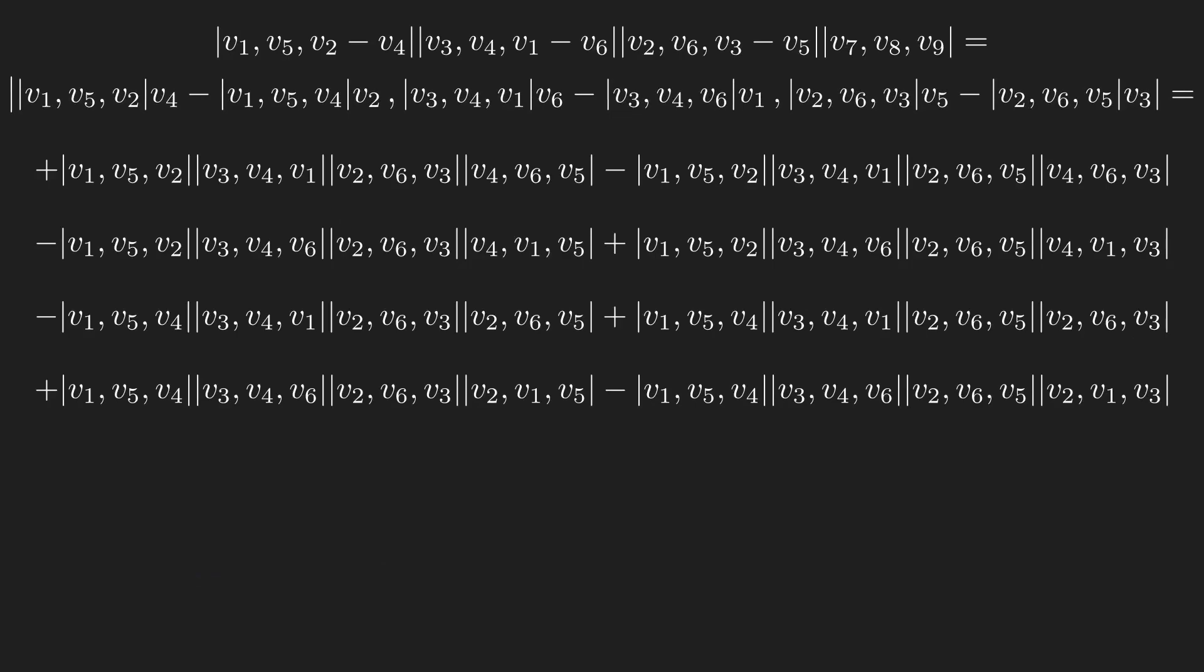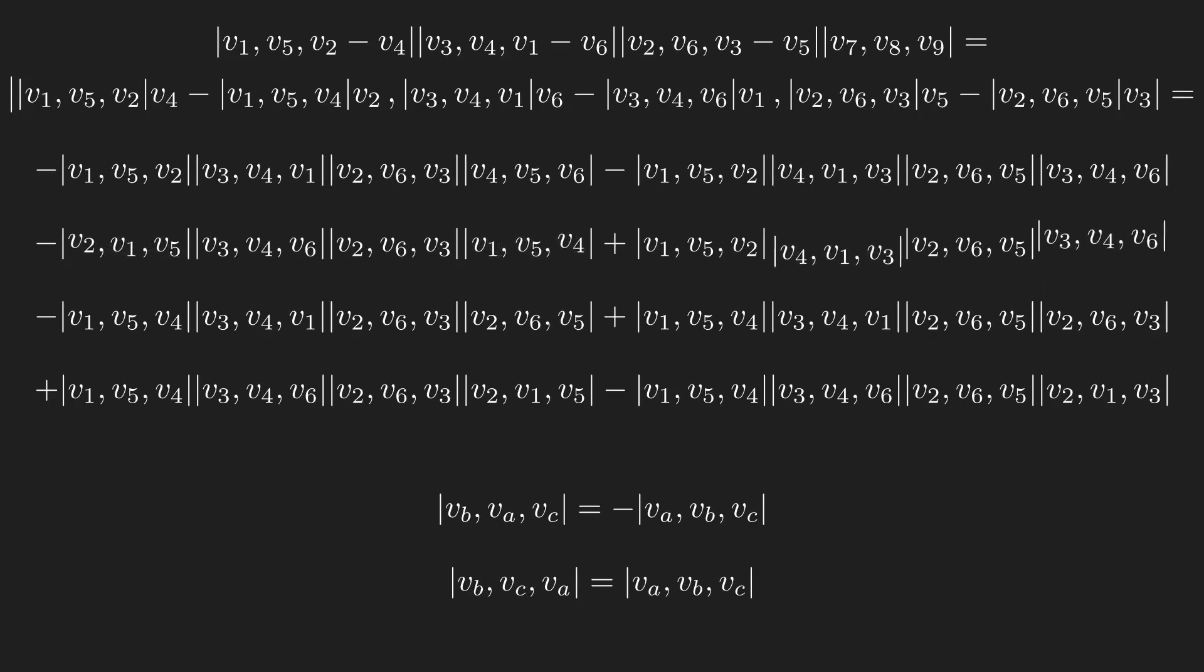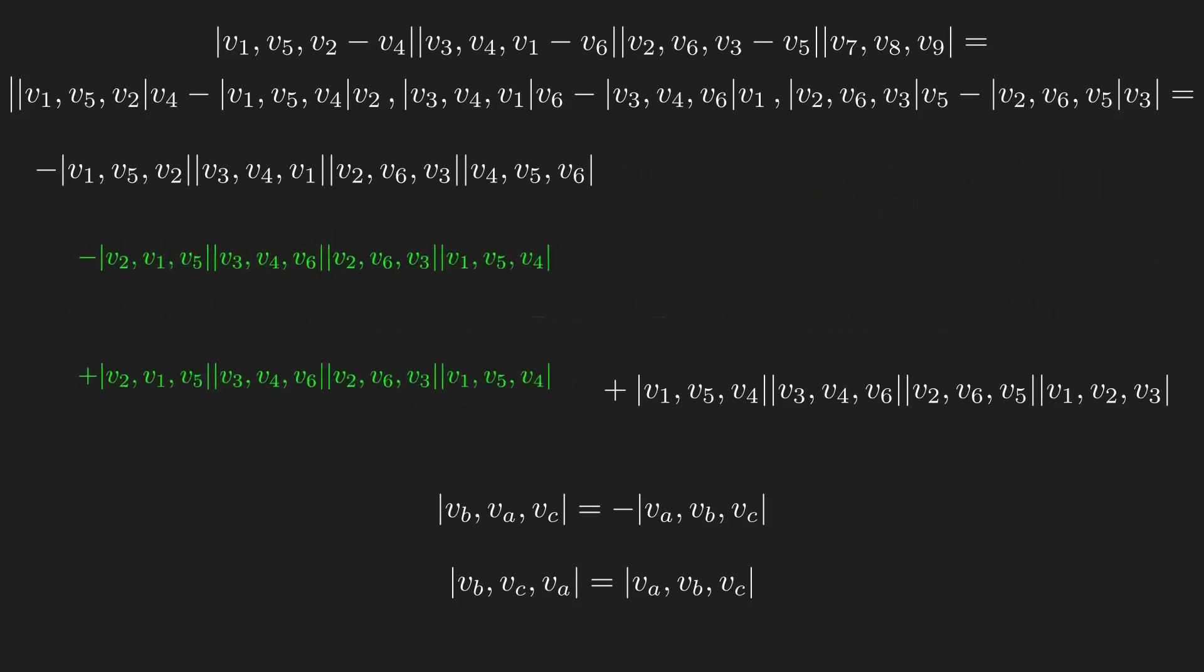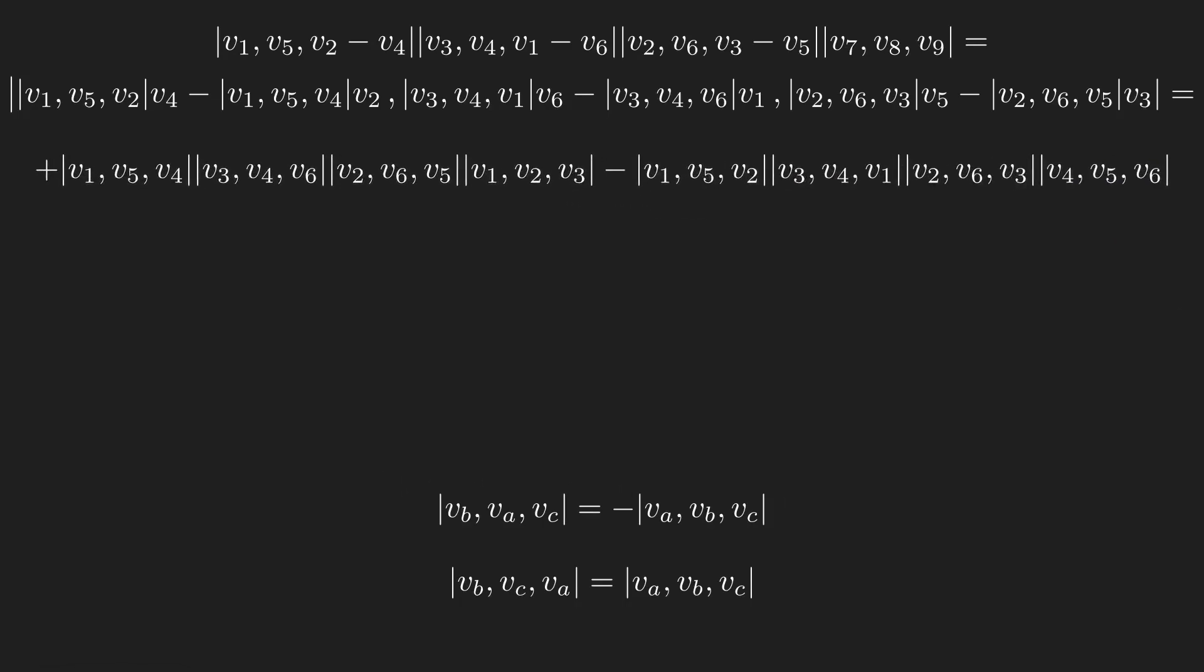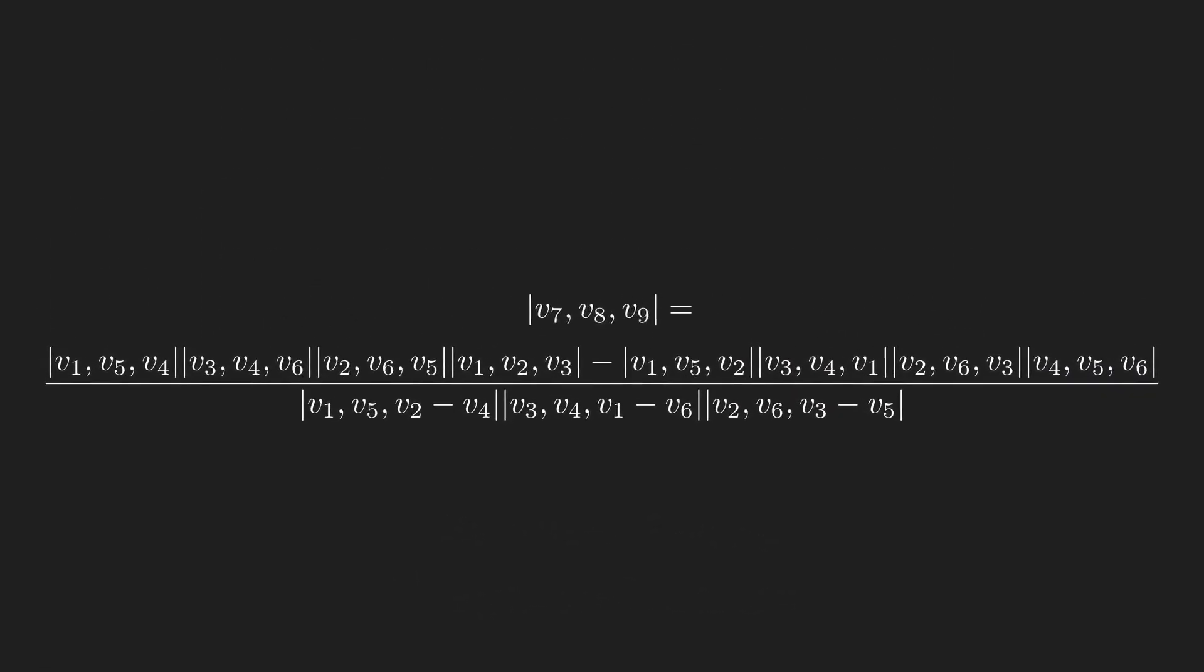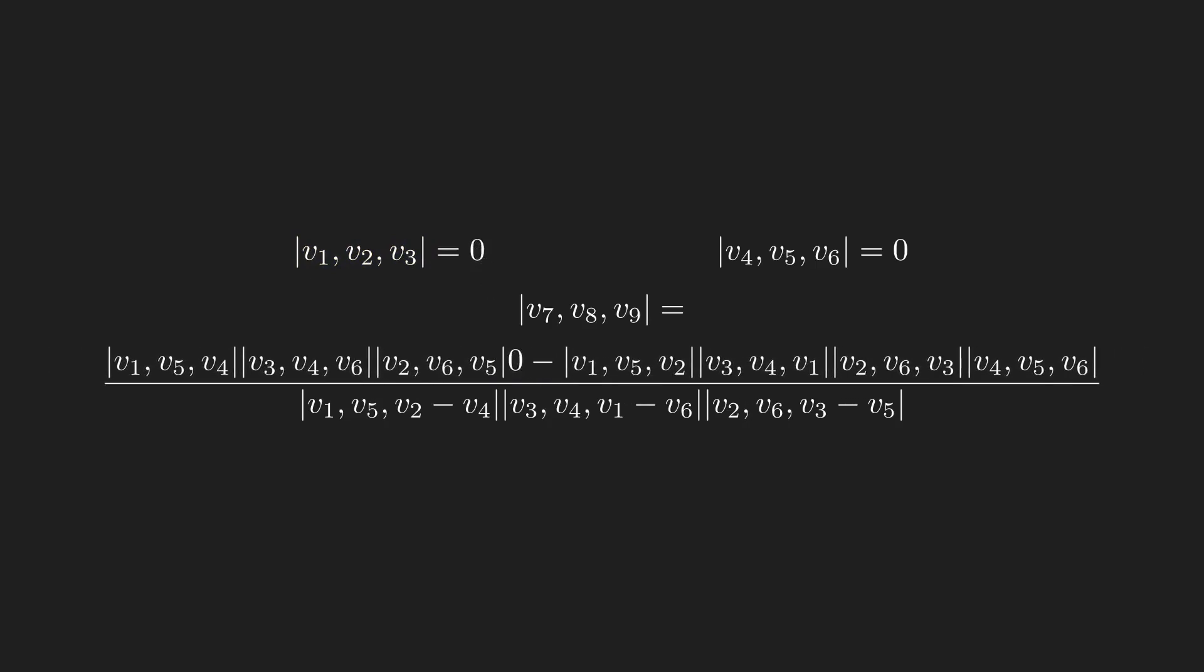Overall, there are 8 terms. I'll do some rearranging using the property that swapping vectors in the determinants negate them, so swapping twice doesn't change the sign. I find that 3 pairs of terms cancel. Next I'll use the remaining two collinearity rules. The determinants of vectors 1, 2, and 3 can be subbed into the first term, and the determinants of vectors 4, 5, and 6 can be subbed into the second term, making the whole thing equal 0.